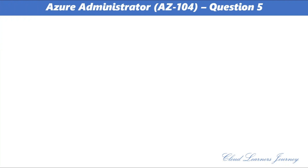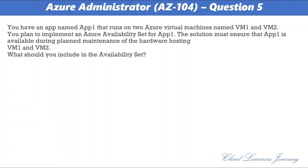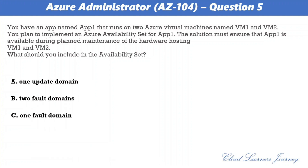Question number 5. You have an app named App1 that runs on two Azure virtual machines named VM1 and VM2. You plan to implement an Azure availability set for App1. The solution must ensure that App1 is available during planned maintenance of the hardware hosting VM1 and VM2. What should you include in the availability set? The options are: a) 1 update domain, b) 2 fault domains, c) 1 fault domain, d) 2 update domains.